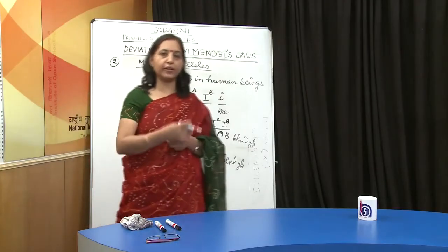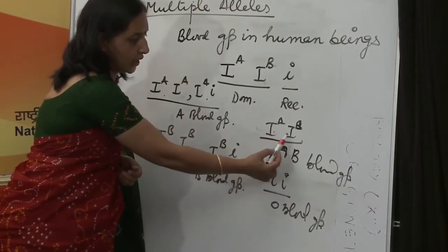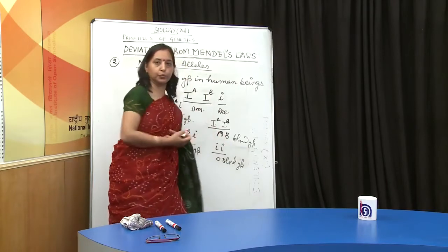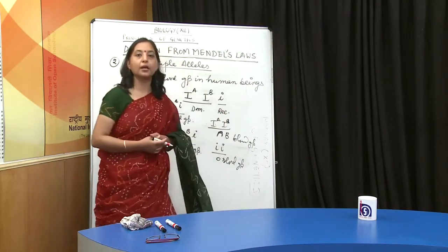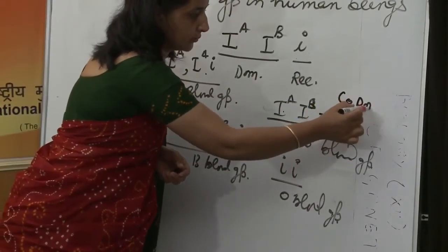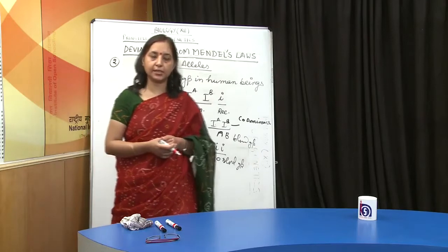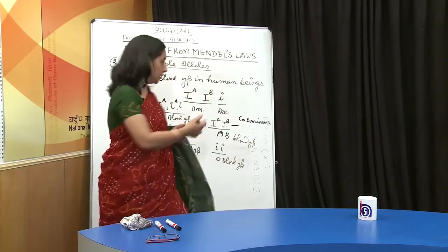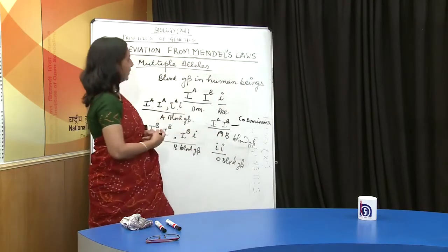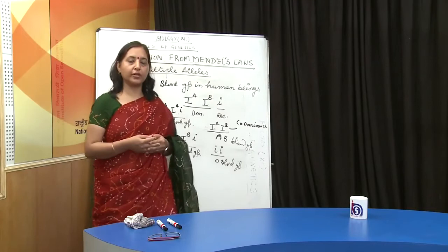There is one more deviation that can be explained here — codominance. I^A and I^B are both equally expressed, therefore the individual has AB blood group. This phenomenon is called codominance, meaning both alleles are equally expressed, and the blood group of the individual is AB.